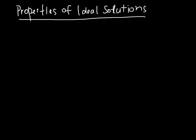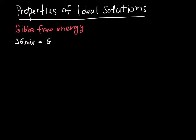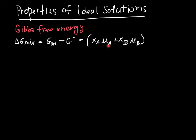Let's start with the Gibbs free energy. We come back to this definition where delta G of mixing is equal to G of the solution minus G of the pure stuff. G of the solution we can get from this expression — it's the weighted sum of the partial molar Gibbs free energies, which is the chemical potential, for the stuff in solution.